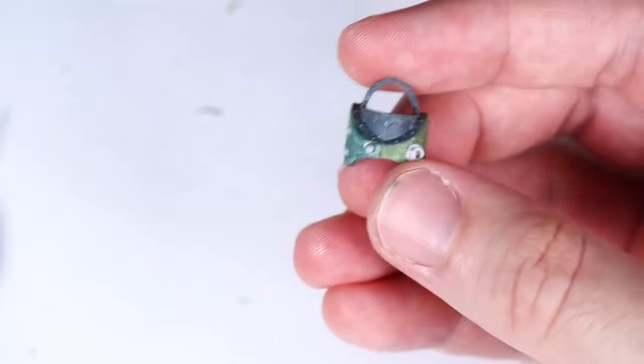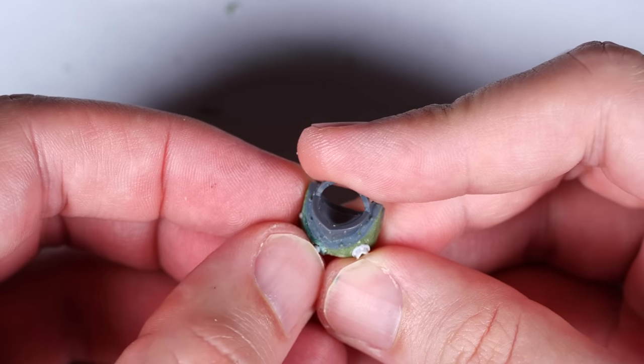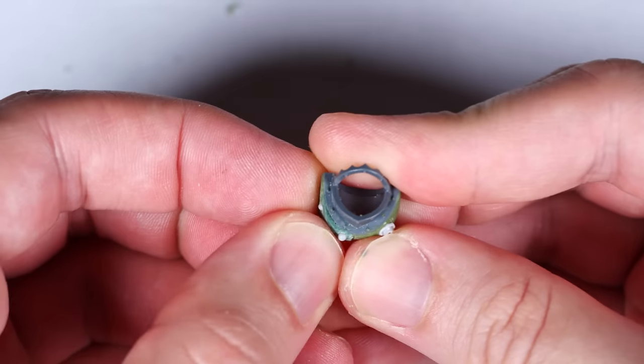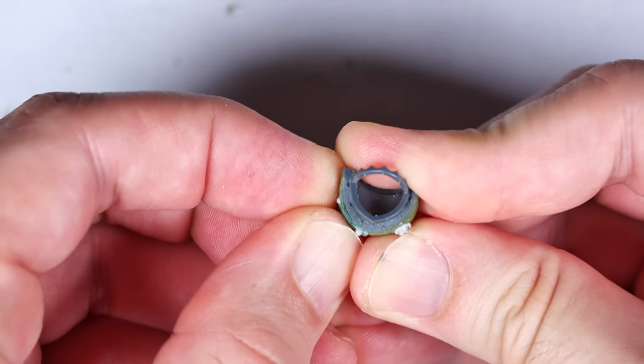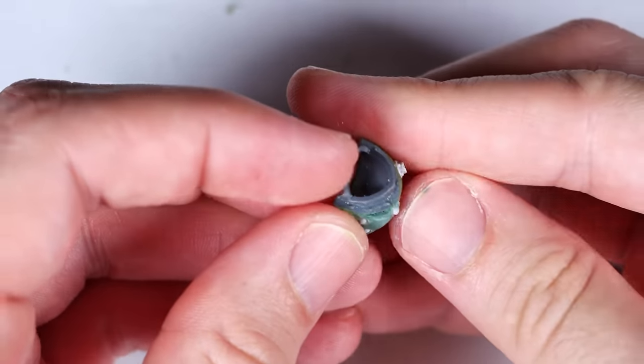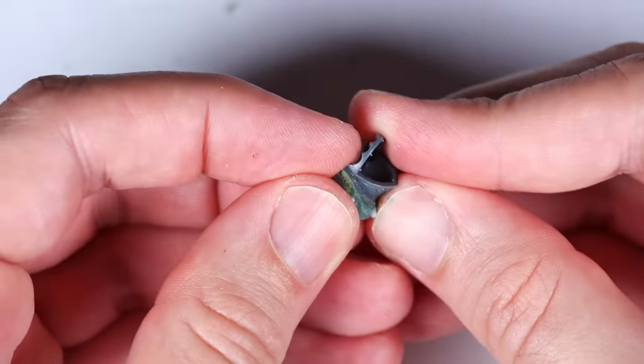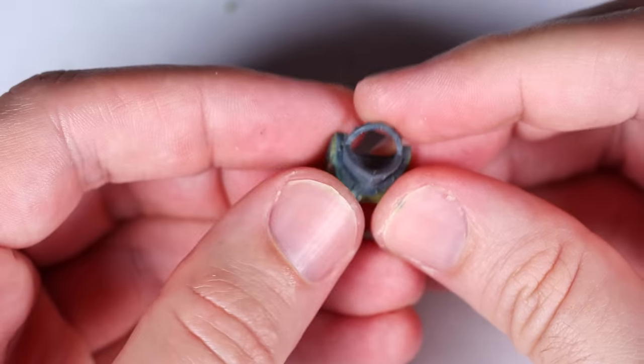Some of my more frequent viewers might also notice a lot of similarities between what I did on this model and what I did with my Dominus Terminators for 40K a couple of months ago. If you haven't seen the video though, I'll link it in the description below so you can see a couple more examples of these additional armor plates and other ways you can add bonding studs onto your Terminators.